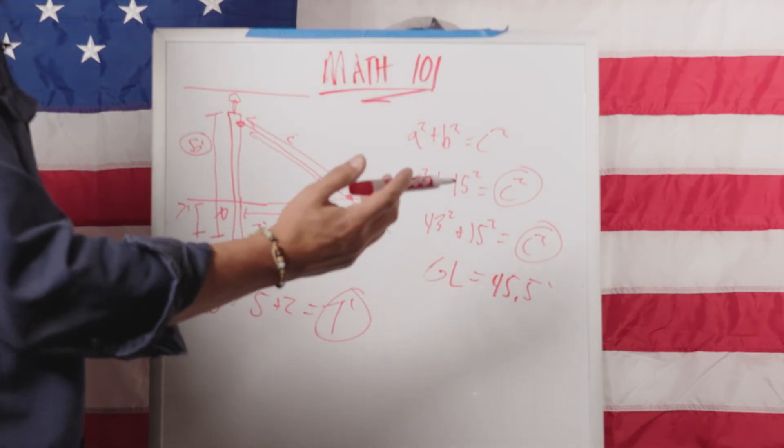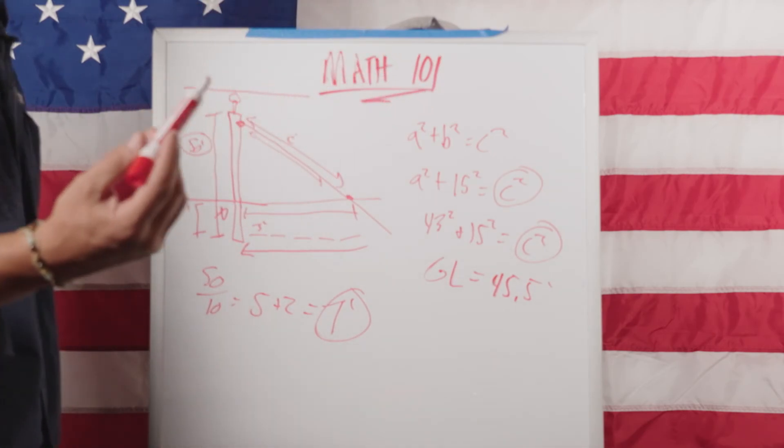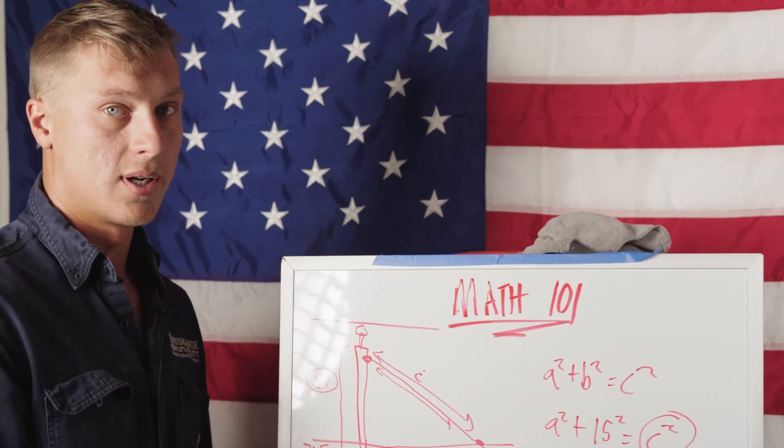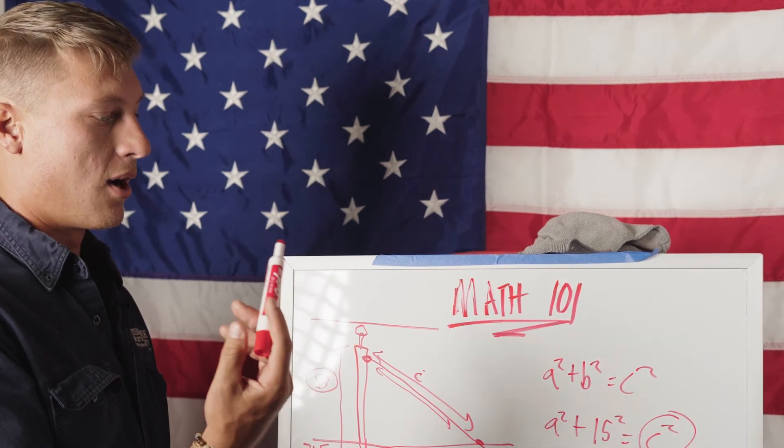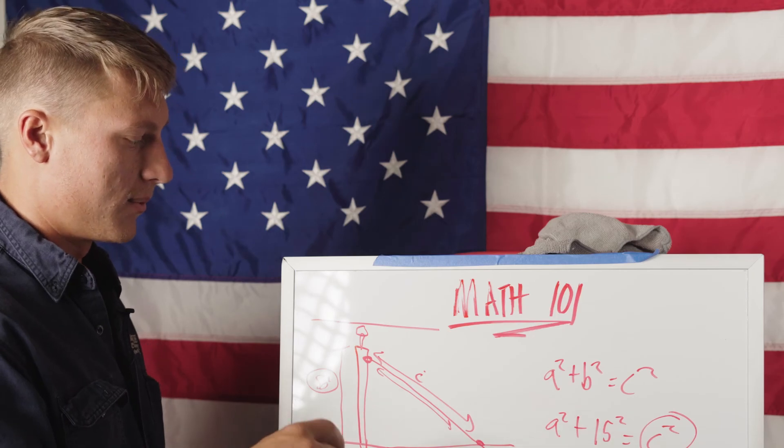But at least you know that this here is approximately 45 and a half feet of guy wire. So then you just step out 50 feet and you know that you're gonna have plenty of guy wire. So that's how you can use a² + b² = c² in a real life situation if you needed to.